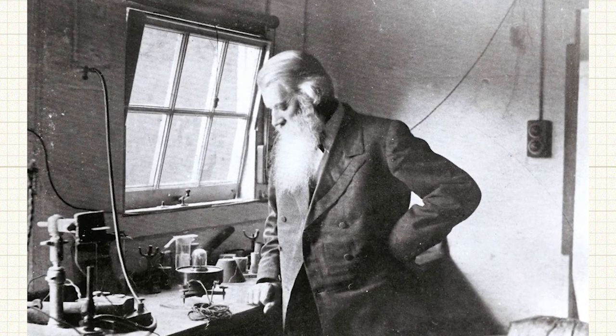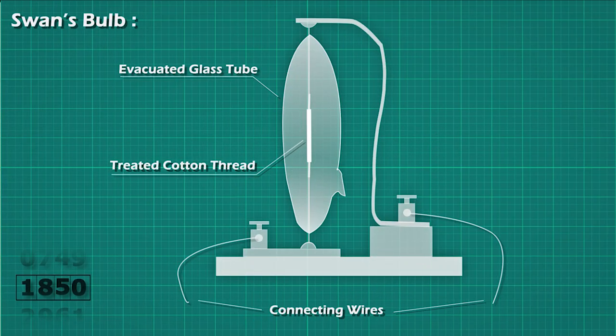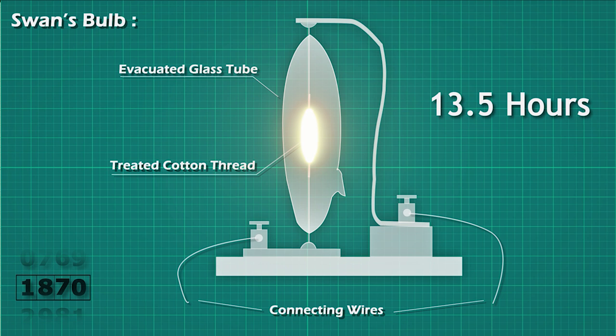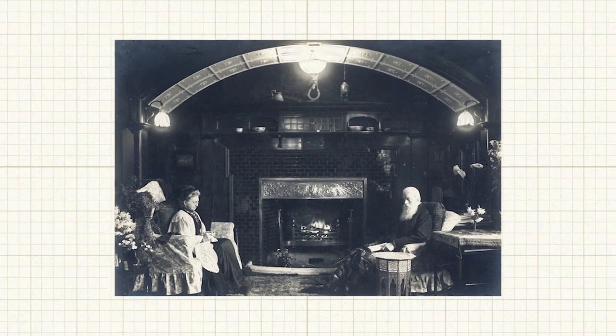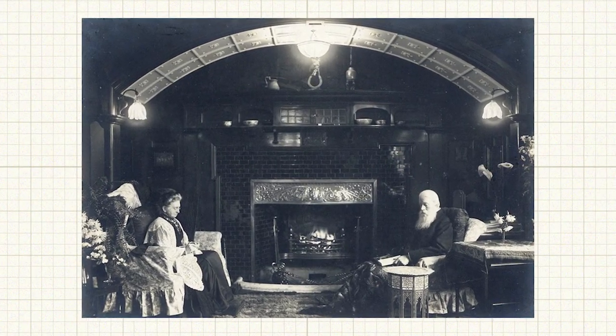However, in the 1870s, better vacuum pumps became available and Swan continued experiments on light bulbs. Swan developed a longer lasting light bulb using a treated cotton thread. Swan's electric light bulb could last for 13.5 hours and his home became the first house in the world to be illuminated by electric light.